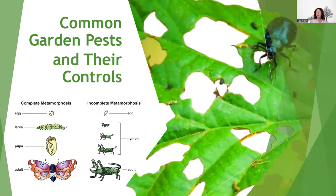Now moving on to common garden pests and their controls. Most insects are going to have either complete or incomplete metamorphosis. With incomplete metamorphosis, the nymphs look like tiny little versions of the adults after the egg stage. With complete metamorphosis, the insect goes through egg, larval, pupal, and adult stages — like a butterfly with its chrysalis.